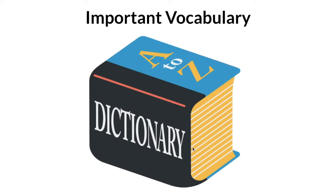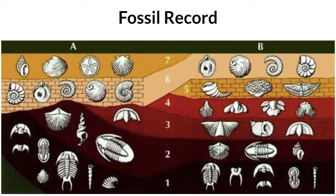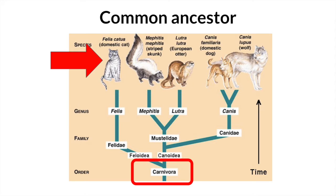Here's some important vocabulary you'll need for today. Charles Darwin — he was a scientist and one of the first people to talk about evolution. Fossil record — the record of all of the fossils that paleontologists and scientists have found. Common ancestor — for example, the cat, skunk, otter, and dogs all evolved from the same common ancestor.